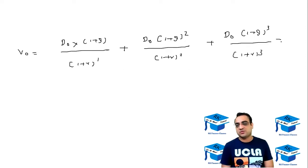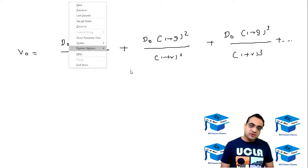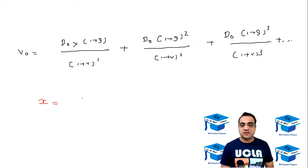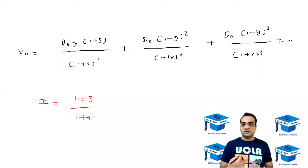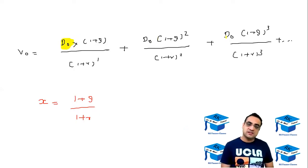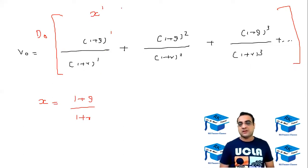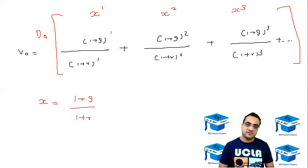Now we are going to substitute x equal to one plus g upon one plus r. I'm going to use one plus g upon one plus r as x. D0 is everywhere so I'll take it outside the bracket. Then one plus g upon one plus r to the one would be x to the one, one plus g squared upon one plus r squared would be x squared, then x cubed, and so on — giving us x plus x squared plus x cubed.